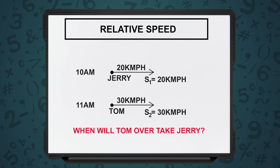So I'll give you a simple problem. Tom and Jerry, as we know, keep on running after each other. Jerry, the small one, starts at 10 a.m. and starts running at a speed of 20 km per hour. At 11 a.m., Tom starts chasing Jerry at a speed of 30 km per hour. At what time will Tom overtake Jerry?